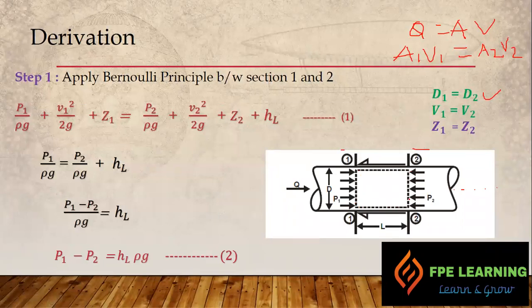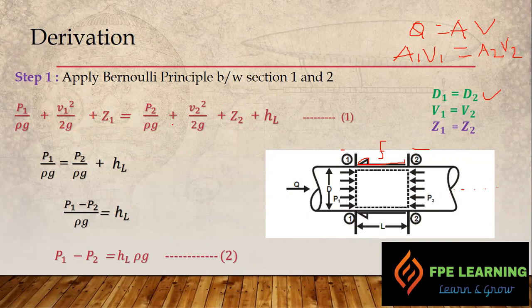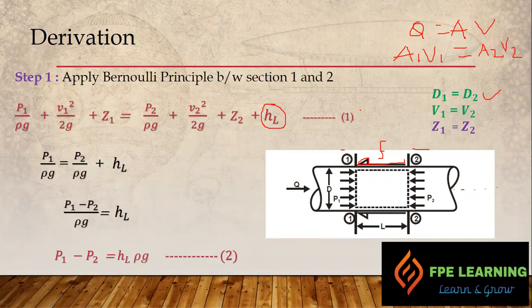We have assumed a length of pipe as our control volume to derive the Darcy-Weisbach equation. We have pressure P1 at section 1 and pressure P2 at section 2. There is also a frictional resistance acting opposite to the flow direction. Bernoulli's equation between sections 1 and 2 is: P1/ρg + V1²/2g + Z1 = P2/ρg + V2²/2g + Z2 + HL, where HL is the head loss we are determining today.